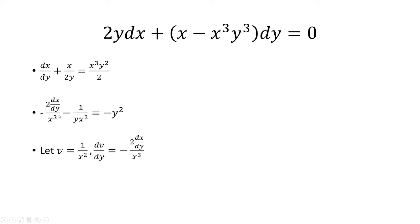Notice that this first term is just dv over dy. And then 1 over x squared is v. And I have over y on the bottom. And that's going to go negative y squared.